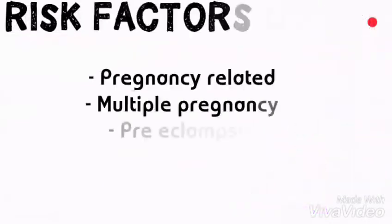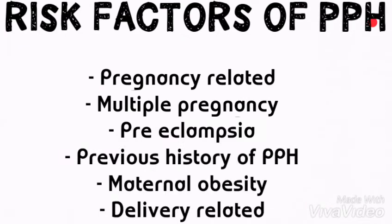Let us now look at some of the least risk factors of postpartum hemorrhage. Pregnancy-related risk factors include antepartum hemorrhage in the current pregnancy, multiple pregnancies resulting from uterine atony due to a large placenta site, preeclampsia, pregnancy-induced hypertension, previous history of postpartum hemorrhage, and maternal obesity due to poor uterine tonicity. Delivery-related risk factors include caesarean section due to poor retraction.